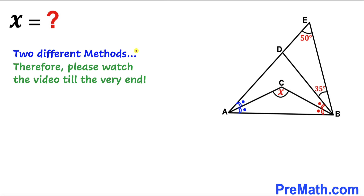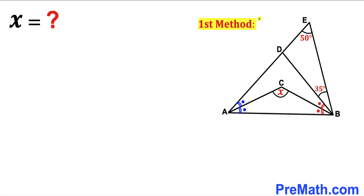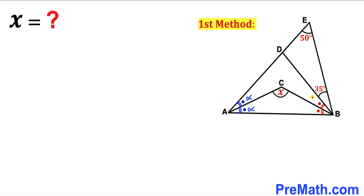I'm going to share two different approaches, so please watch the video till the very end. Here's our very first method and step. Let's focus on these congruent angles at both ends. Since these angles are congruent, let me call this angle alpha — then this angle is alpha as well. And likewise I'm going to label this angle as beta, so this angle is beta as well.